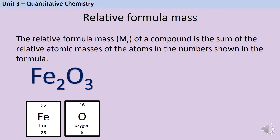You might wonder why the symbol for relative formula mass is MR and not FR. This is because originally it was called relative molecular mass. But scientists quickly realised that this was a really useful concept even for things that weren't molecular — for instance, iron oxide is not a molecular substance, it contains ionic bonds, but knowing its relative formula mass is still really useful. So we just changed the name.